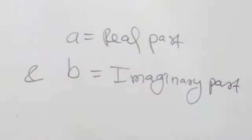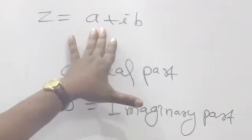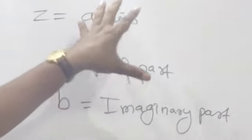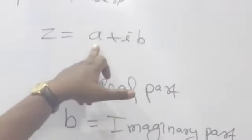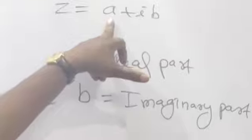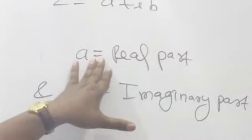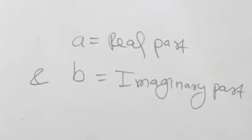It means if any number is multiplied by i, then that part will be the imaginary part. If in a term there is no i, then it is the real part, in simple form.